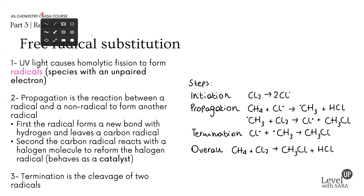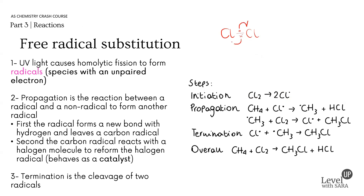In terms of mechanism, we have chlorine bonded to another chlorine. The line means two electrons — a covalent bond — and each electron moves to each chlorine, forming two chlorine radicals shown with a little dot to indicate an unpaired electron. This is the initiation — homolytic fission.